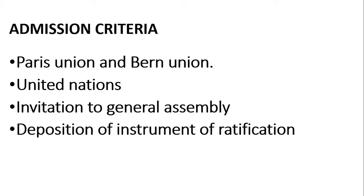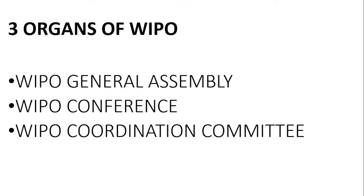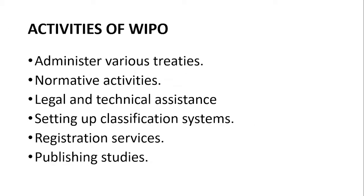The three organs of WIPO are: the WIPO General Assembly, the WIPO Conference, and the WIPO Coordination Committee. The General Assembly reviews and approves reports prepared by the Director General and meets once a year. The Conference adopts amendments to the WIPO Convention and decides on matters related to legal and technical assistance. The Coordination Committee advises the General Assembly, the Conference, and the Director General on administrative and financial matters, prepares draft agendas, and nominates candidates for the post of Director General.